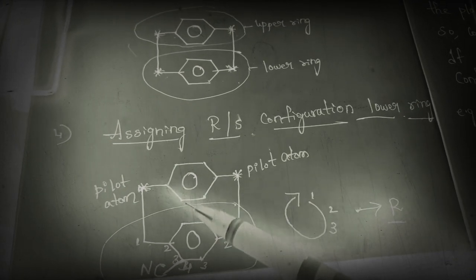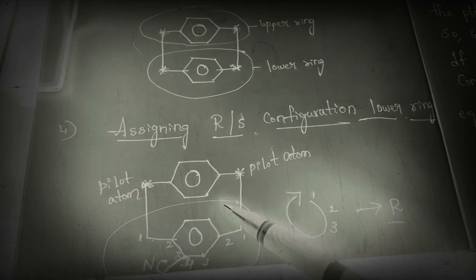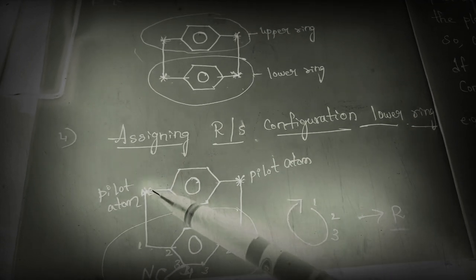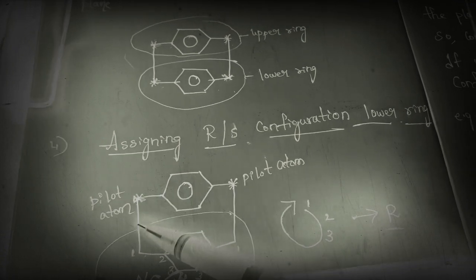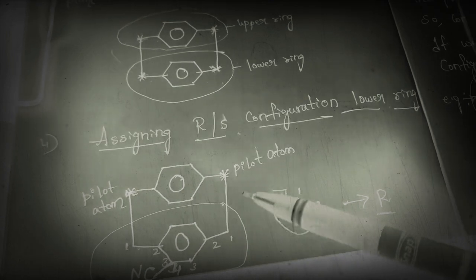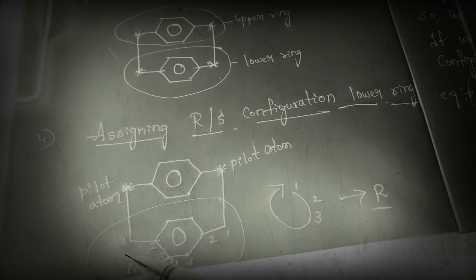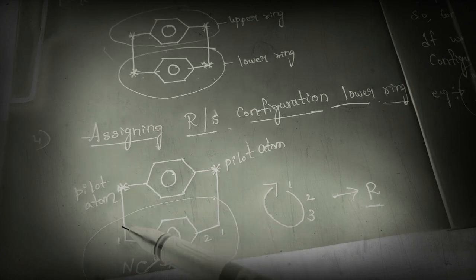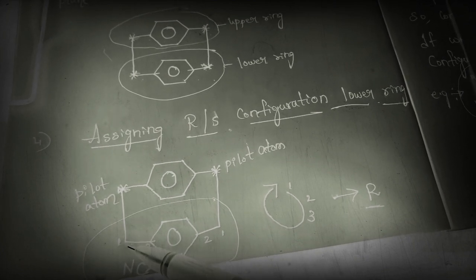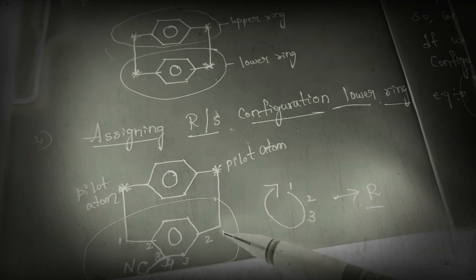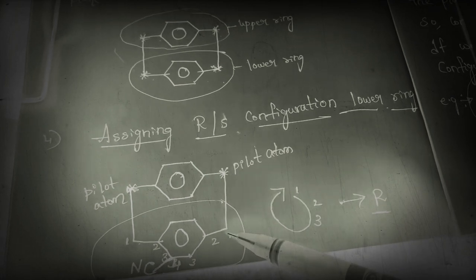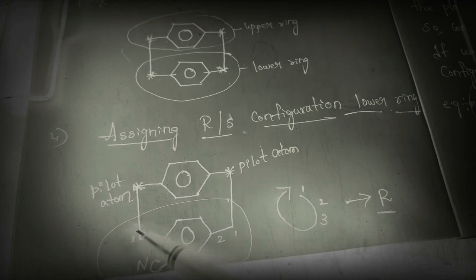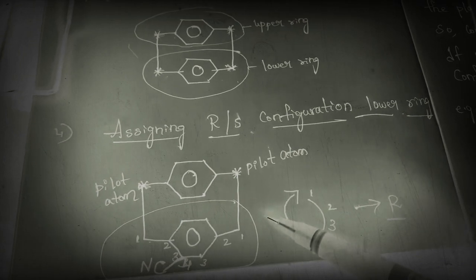As we discussed in our previous class: for this ring, these two atoms are the pilot atoms. We should start numbering from the atom adjacent to the pilot atom — that is important. This carbon is adjacent to the pilot atom, and this carbon is also adjacent to the pilot atom. Let us start numbering: one, two, three.